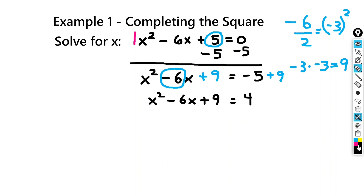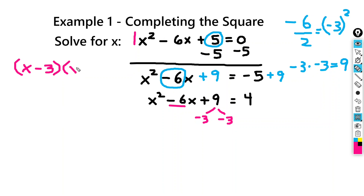So to factor this, our next step is to factor. We would list the pair of factors that add to negative 6, and that's going to be negative 3 times negative 3. One way to write the left-hand side would be x minus 3 times x minus 3. But another way we could write that is just x minus 3 squared, because we're multiplying x minus 3 times itself — so we're squaring it. So we have x minus 3 squared equals 4.